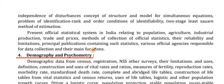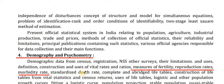Point number 4: Demography and Psychometry. Demographic data from census, registration, and other surveys, their limitations and uses, definitions, construction and uses of vital rates and ratios, measures of fertility, reproduction rates, mortality rates, standardized death rates, complete and abridged life tables, construction of life tables from vital statistics and census returns.